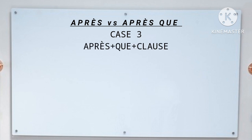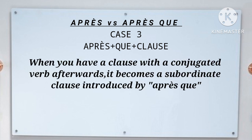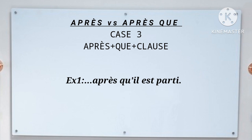Now let's look at Case 3: après + que + clause. When you have a clause with a conjugated verb afterwards, it becomes a subordinate clause introduced by après que. Example: Après qu'il est parti. If you look at this clause, there is a conjugated verb, which is a passé composé — il est parti — hence the need for que to be introduced.